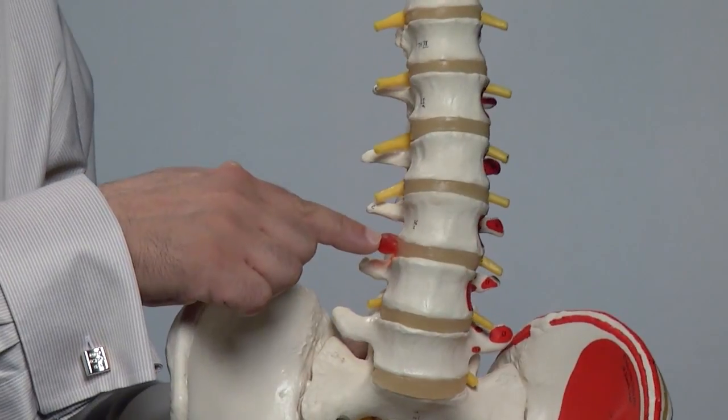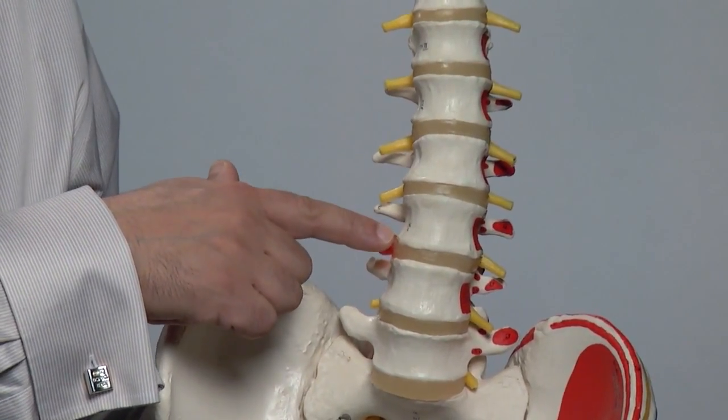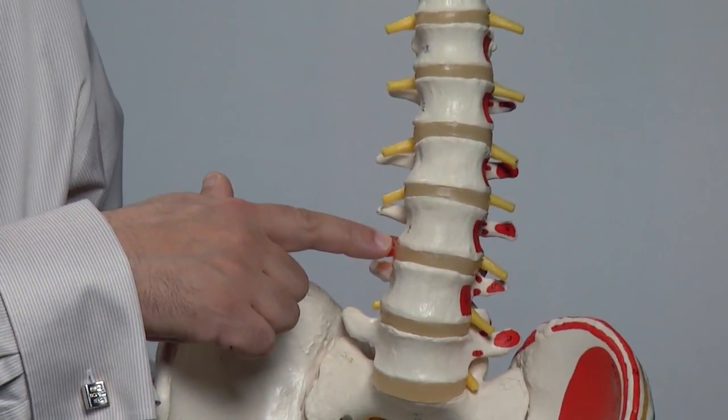A disc herniation, as is shown here, can occur, for instance, on one side. In this situation, we would often see back pain with associated leg pain. In more severe cases, there can also be associated numbness and or weakness involving that side.